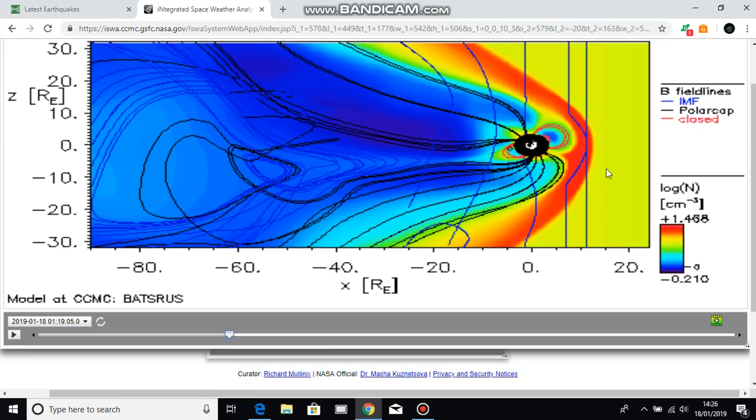This is our bow shock, this is our magnetosphere, this is Earth in the middle - white side's daytime, black side's nighttime. This is our magneto tail which you can see is disrupted in this image, and this is our magnetopause here. These are polar cap lines, magnetic field lines.